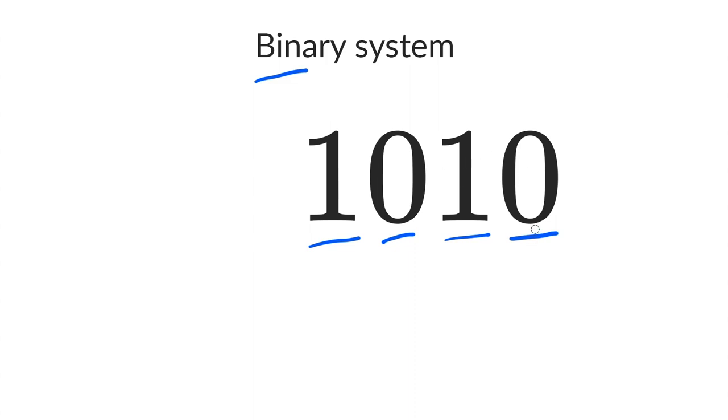Each of these digits can also be called a bit, since a bit represents 0 or 1. Now this 4-digit number equals the decimal number 10, and we're going to see why.